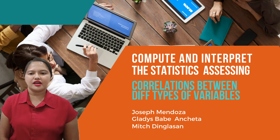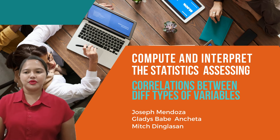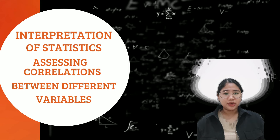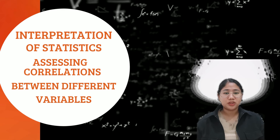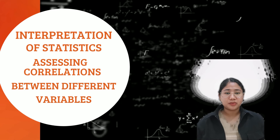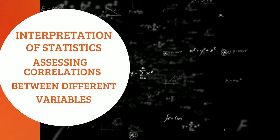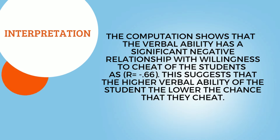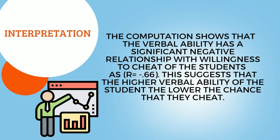Good afternoon, everyone. I'm Micheling Lasan, and I will discuss the interpretation of correlations. For the Pearson's R computation on verbal ability and willingness to cheat, the result shows a significant negative relationship with R = negative 0.66. This suggests that the higher the verbal ability of students, the lower the chance they will cheat; as verbal ability increases, willingness to cheat decreases. Thus, we reject the null hypothesis and support the alternative hypothesis.